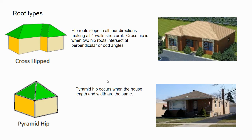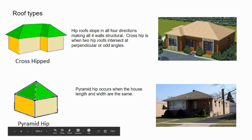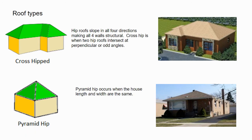Hip roofs are pretty common. A cross hip just means two hip roofs intersecting each other. A pyramid hip happens when you have the same width-to-length ratio in the footprint — sloping all four sides at the same pitch naturally creates a pyramid with a peak at the middle. These two are just variations of hip roof style.